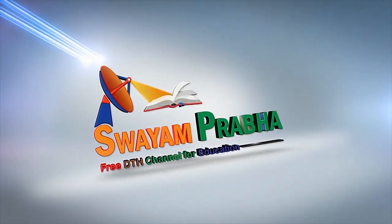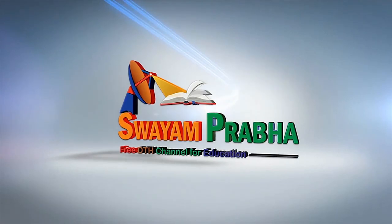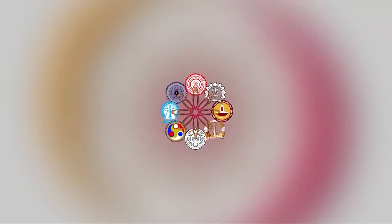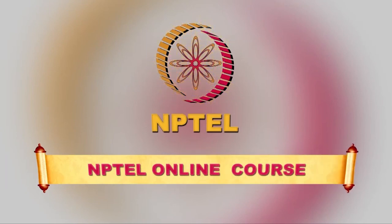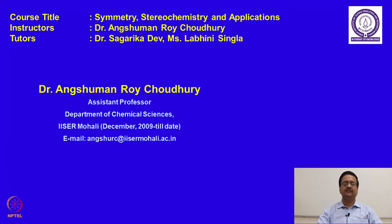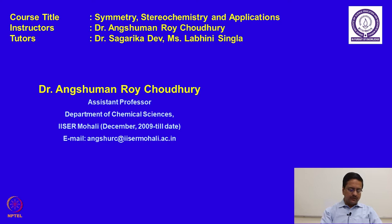Welcome back to the course on Symmetry, Stereochemistry and Applications. In this course we have already discussed about the nomenclature of organic compounds and after that we started discussing about the stereochemistry of simple organic molecules. In the previous lecture we had understood the different conformations of cyclohexane and monosubstituted cyclohexane derivatives. In this lecture today we will try to understand the conformations and conformational aspects related to disubstituted cyclohexane molecules.